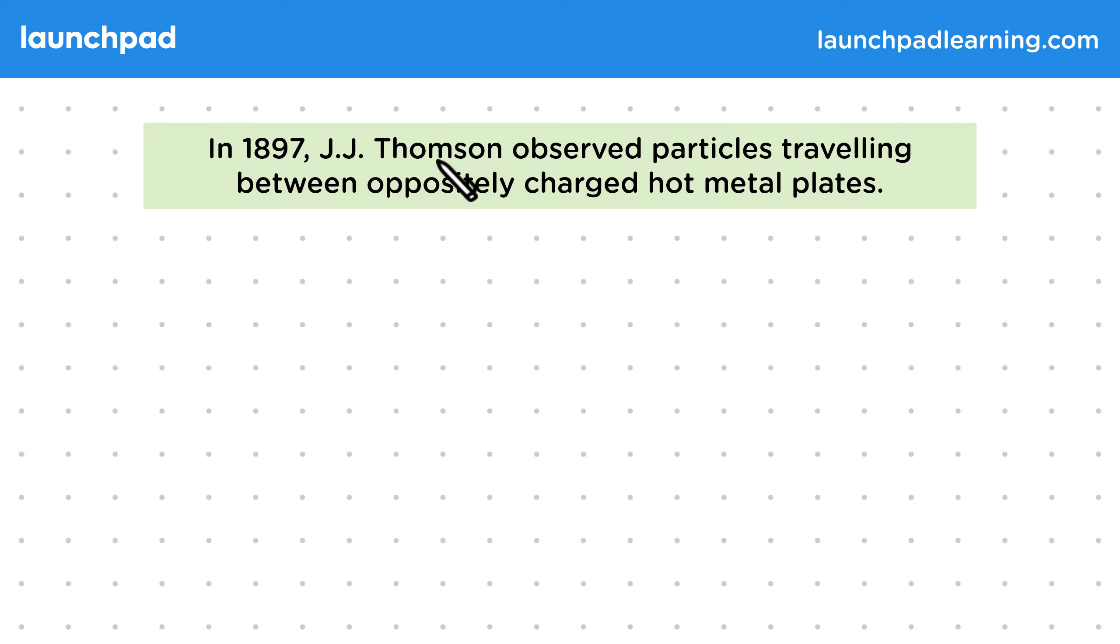In 1897, J.J. Thompson observed particles travelling between oppositely charged hot metal plates.